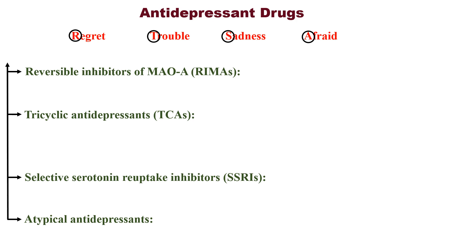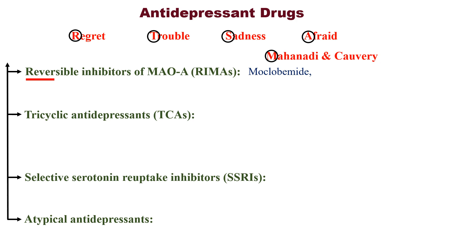The first category of antidepressant drugs is reversible inhibitors of MAO-A. Here, remember 'river' — you know the names of many rivers. In this case, remember two names: one is Mahanadi and another one is Kauvery. Mahanadi starts with the letter M, and M is for moclobemide. Kauvery starts with the letter C, and C is for clorgyline.